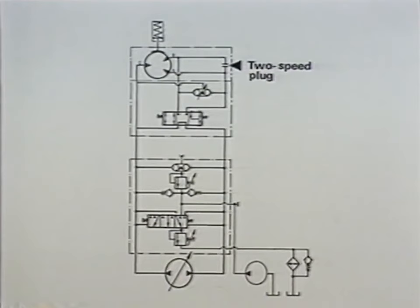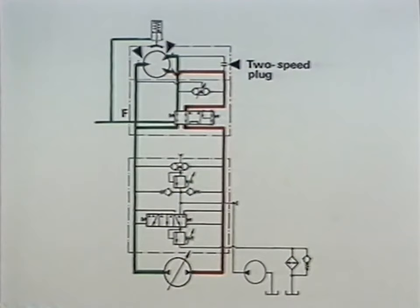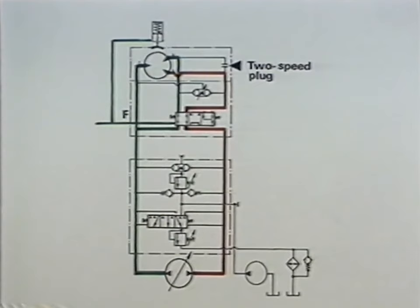By applying pilot pressure at the F connection, the two-speed valve spool is shifted to a position where hydraulic motor ports B and C are connected to each other.